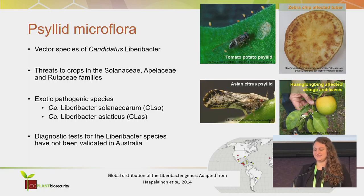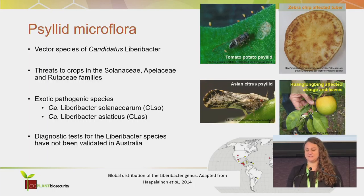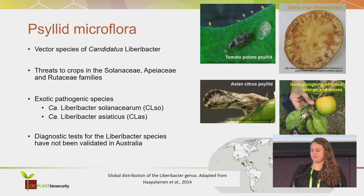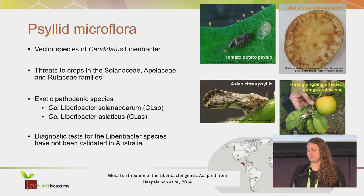Psyllids are small sap-sucking insects that are known to vector species of Candidatus Liberibacter. They are unculturable bacteria that can threaten crops in the Solanaceous, Apiaceae, and Rutaceae families. Two of major concern to Australia are the exotic pathogenic species: Candidatus Liberibacter solanacearum, which is the causative agent of zebra chip disease and is commonly vectored by the tomato-potato psyllid, and can also affect crops in the Apiaceae family vectored by other psyllids. We're also worried about Candidatus Liberibacter asiaticus, the causative agent of Huanglongbing, which is predominantly vectored by the Asian citrus psyllid.